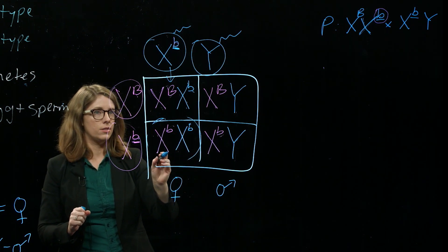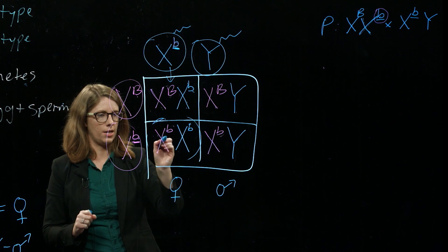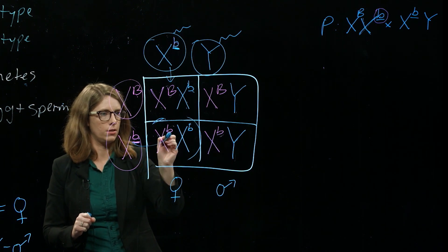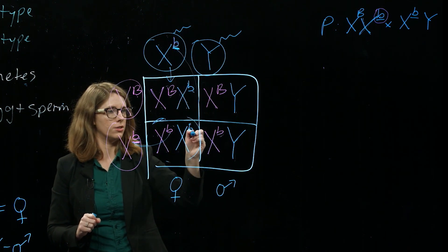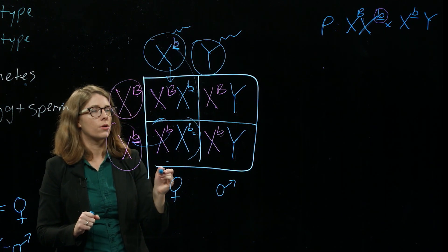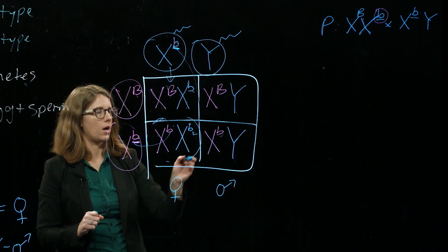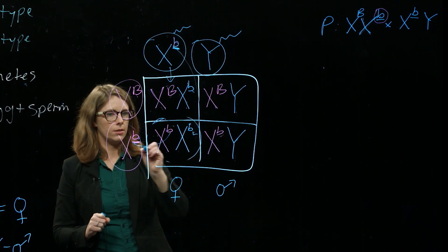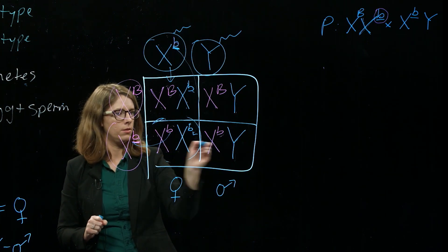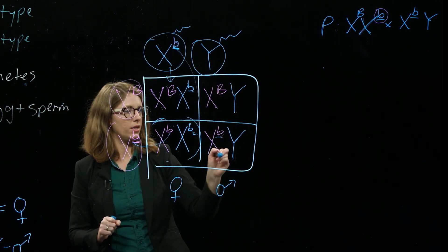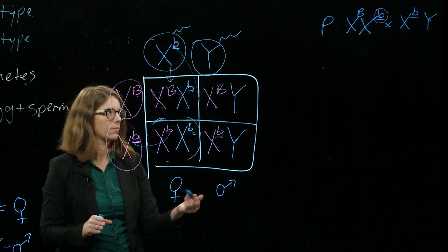This daughter right here is actually colorblind because she got the recessive allele from mom and the recessive allele from dad. So it is possible for girls to be colorblind, it's just not as common. Here we have a son who's colorblind.